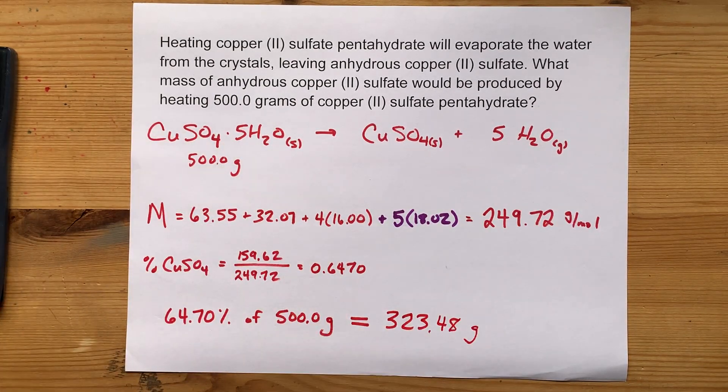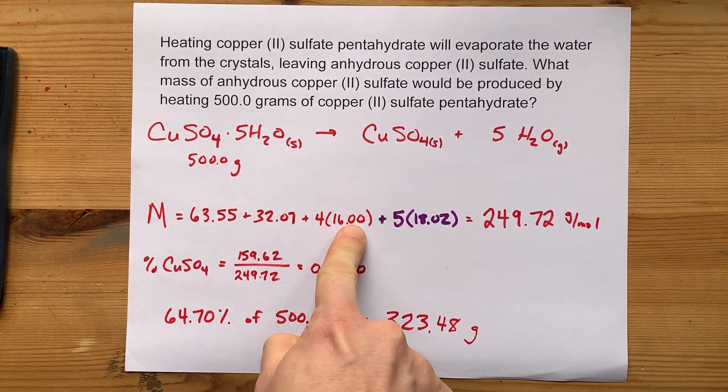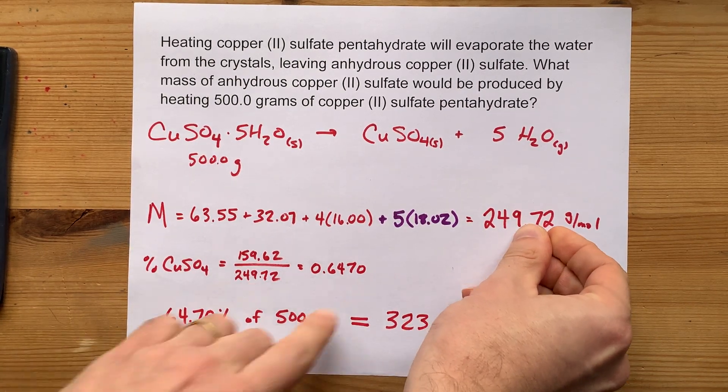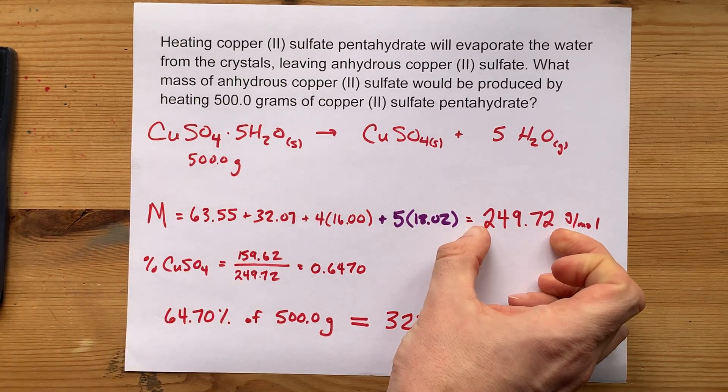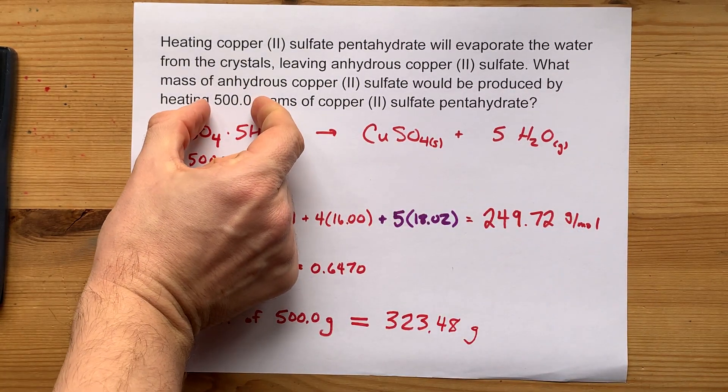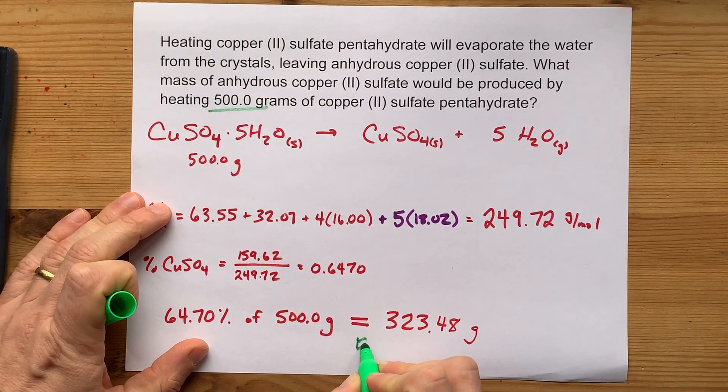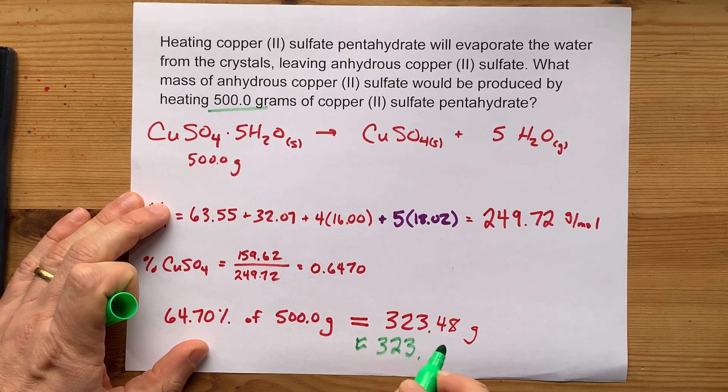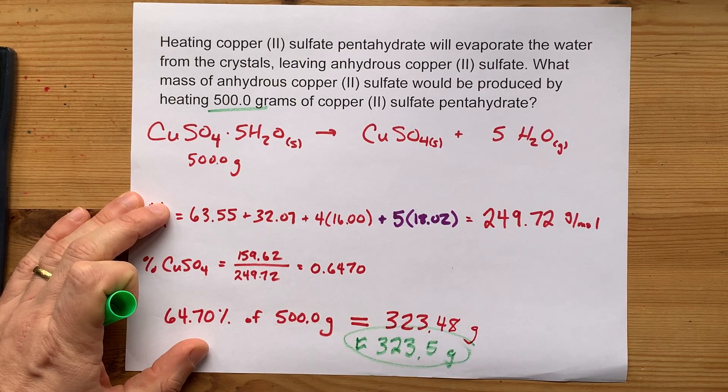Now I've got to watch out for my significant figures here. When you're adding numbers together, you actually take decimal places. So I do want two decimal places in my final answer. That's five sig figs. But this number was only four sig figs. Therefore, I want my answer to be four significant figures. So the official answer here is 323.5 grams. It's just the way significant figures works.